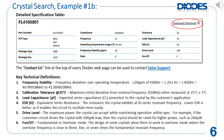When you select part number FL4100001, the detailed specification table on this page is shown. The link to download the datasheet is in the upper right corner. To request samples or additional information, there is a Contact Us link at the top of every Diodes website page that can be used to contact sales support. Key technical definitions are provided on this page for your reference.